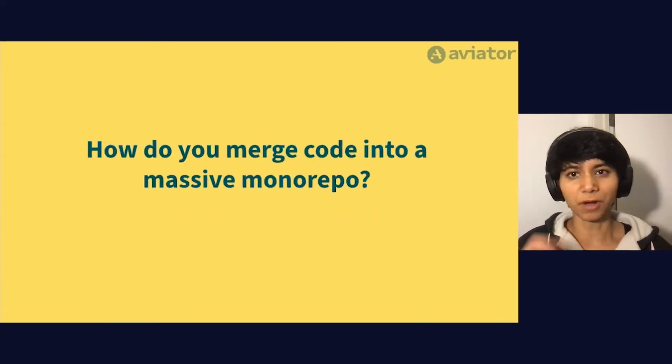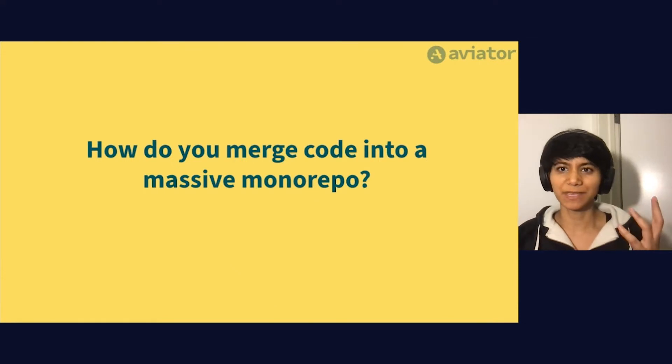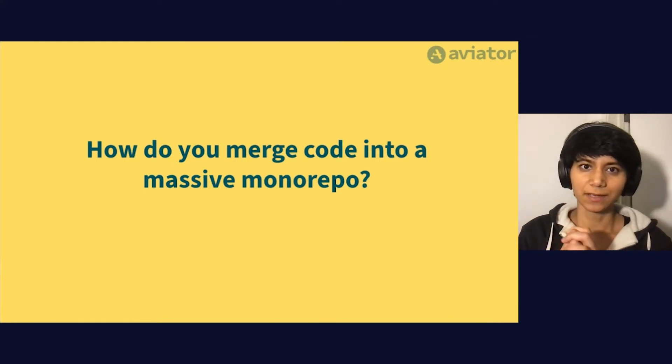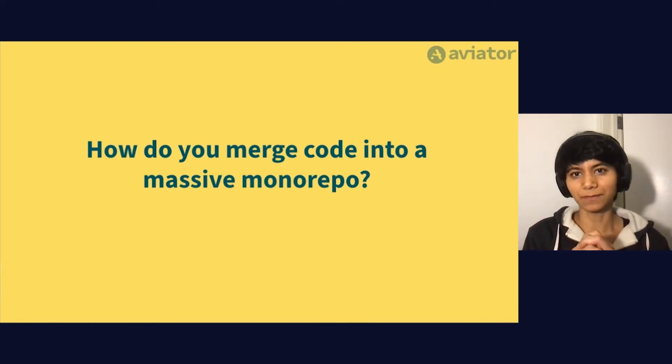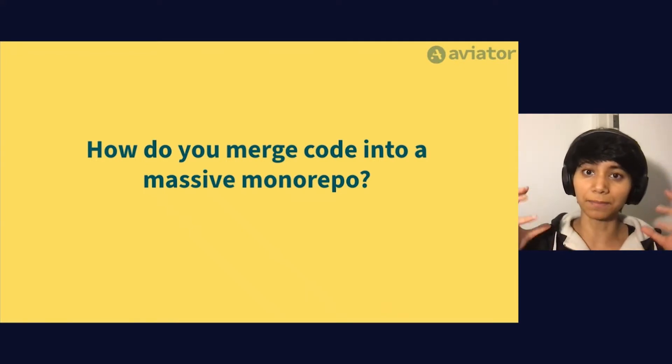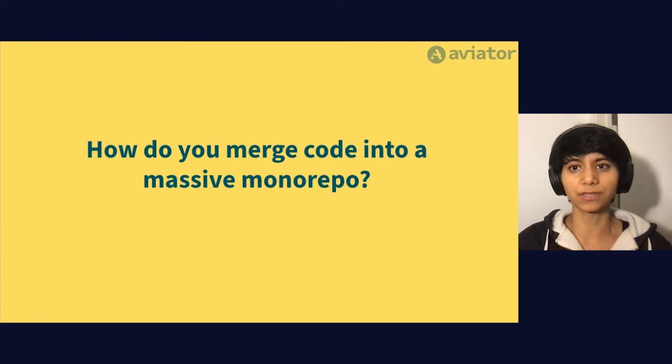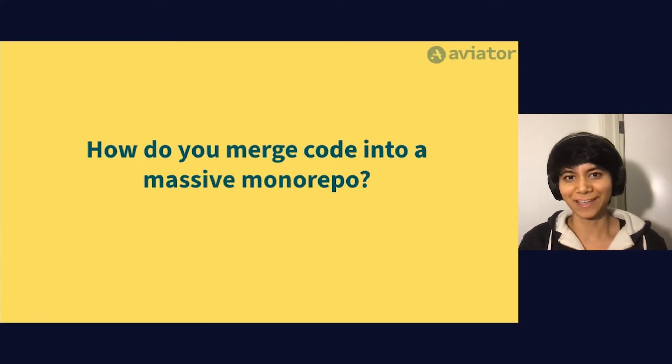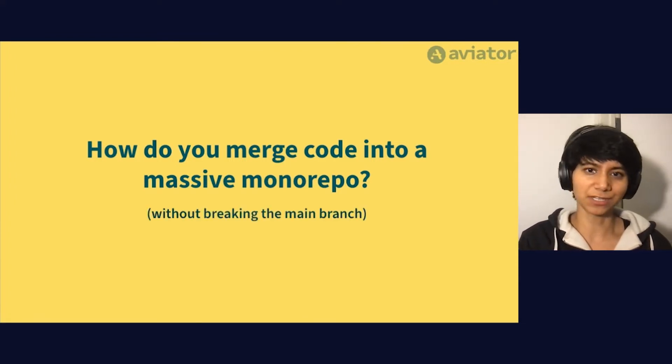When you have a massive monorepo, everyone on the team is making changes to the same code base. So how do you merge code coming in from a large number of developers into that single monorepo while also ensuring that the combined product always produces a version that works? In other words, how do you ensure that your main branch doesn't break?